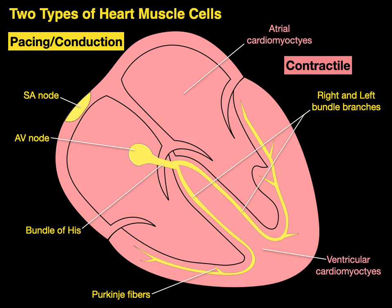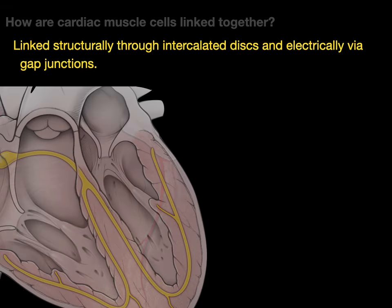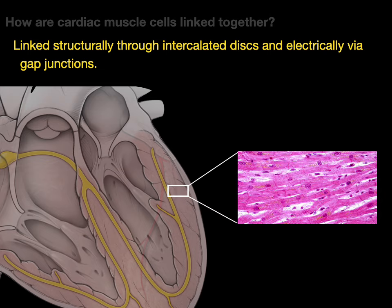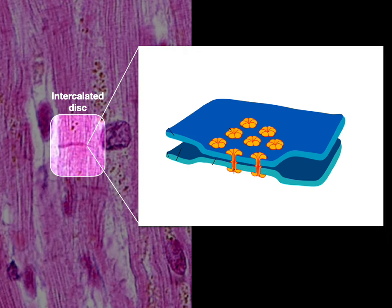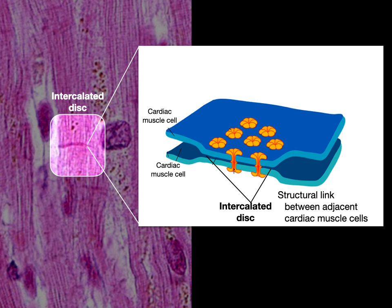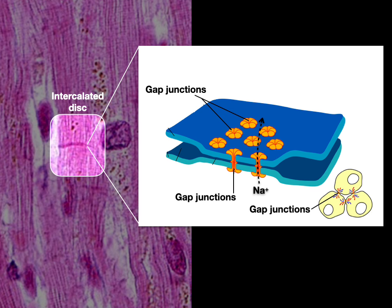Two types of heart muscle cells: contractile and pacing. How are cardiac muscle cells linked together? They're linked structurally through intercalated discs and electrically via gap junctions. Here's some ventricle tissue — we zoom in on the intercalated disc to show those two adjacent cardiac muscle cells. The intercalated disc is the structural link, but there are also gap junctions, sometimes called connexons, which are the electrical link between adjacent cardiac muscle cells — that's how an action potential spreads from one cell to the next.